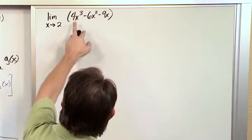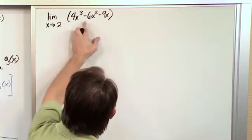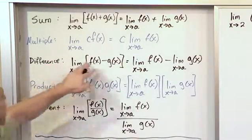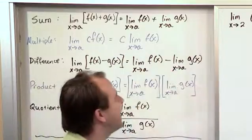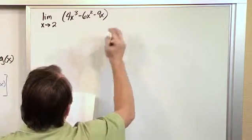But really what's happening is you have this term which is a function, this is a function, and this is a function, and they're all subtracted. So basically you're going to use the difference guy here which says that I can take the limit of each individual thing and then subtract them. So whenever I take the limit of each individual thing I'm essentially going to be plugging in values.